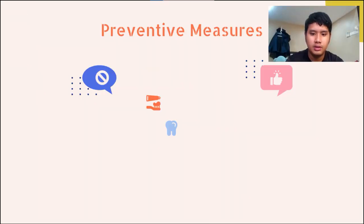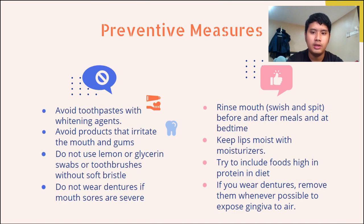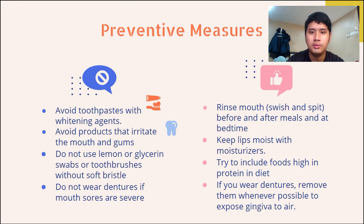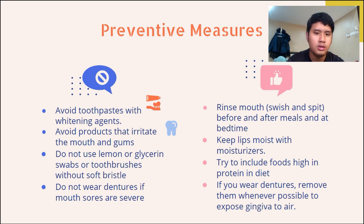The preventive measures include rinsing, swishing, and spitting before and after meals and at bedtime. Keep the lips moist with moisturizers, include foods high in protein in the diet, and remove dentures whenever possible to expose the gingiva to air. Avoid toothpaste with whitening agents, products that irritate the mouth and gums, lemon or glycerin swabs, and toothbrushes without bristles. Do not wear dentures if mouth sores are severe.